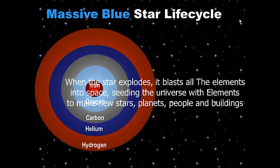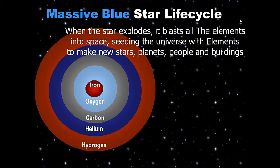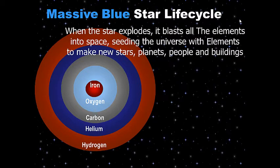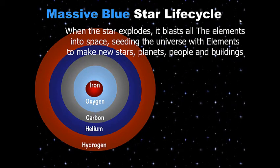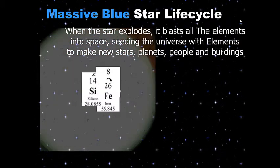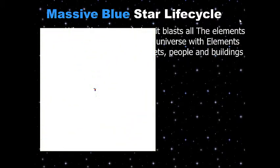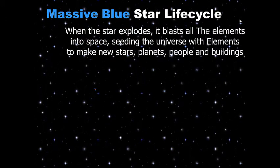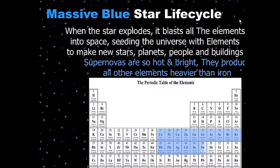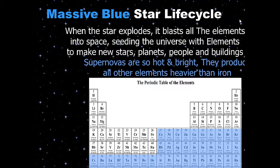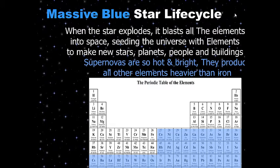When the star explodes, it blasts all the elements into space, seeding the universe with elements to make new stars, planets, people, and buildings. A blue massive star was here before our solar system — it exploded, collapsed, and seeded our universe with elements, out of which came our new planets and our new Sun. Supernovas are so hot and bright they produce all elements heavier than iron — gold, platinum, lead. If you have a gold ring, your ring was made from a supernova.